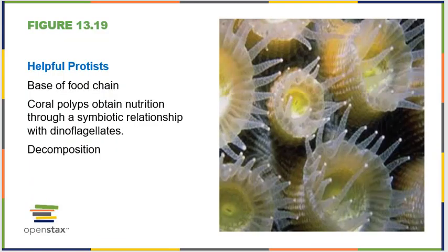There are also some helpful protists. They are the base of the food chain in most oceanic environments. Coral polyps obtain their nutrients through a symbiotic relationship with dinoflagellates, which are a specific type of protist. They also help with decomposition, recycling a lot of nutrients in our environment and keeping the food chain going.